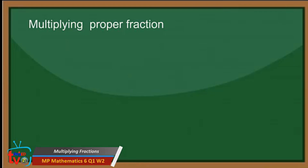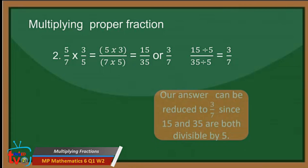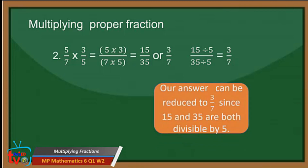Here is another example of multiplying proper fractions. Example: 5 over 7 times 3 over 5. To multiply proper fractions, multiply the numerator and the denominator. 5 times 3 is equal to 15, and 7 times 5 is equal to 35. Our answer can be reduced to 3 over 7 since 15 and 35 are both divisible by 5. So 15 divided by 5 is equal to 3, and 35 divided by 5 is equal to 7. So 5 over 7 times 3 over 5 is equal to 3 over 7.